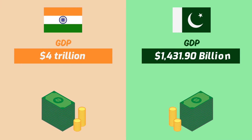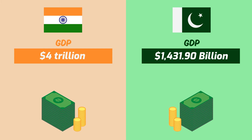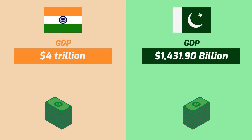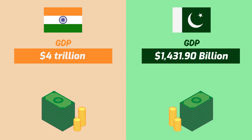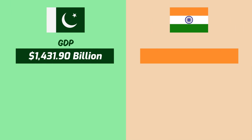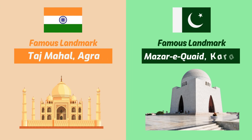GDP of Pakistan is $1,431.90 billion while the GDP of India is $3 trillion. One of the famous landmarks of Pakistan is the tomb of Qadiyazam in Karachi, while one of the famous landmarks of India is the Taj Mahal in Agra.